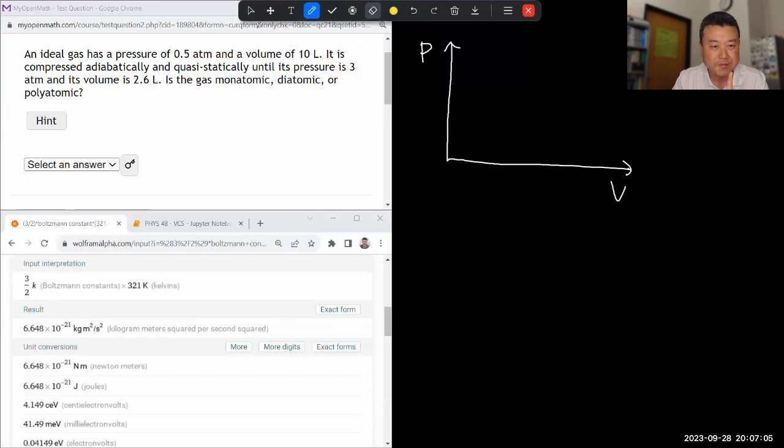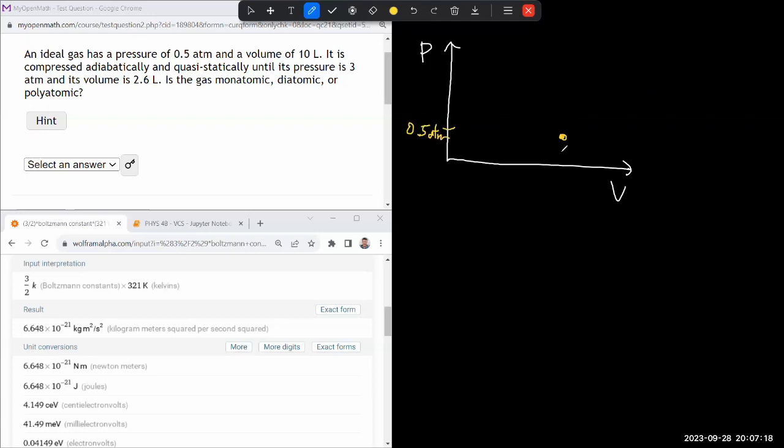So it starts out with some pressure and volume, and it's compressed adiabatically. Okay, so we should start out somewhere here, low pressure, high volume. And then it'll get compressed to something here. And again, when you're drawing it, it'll kind of look like isothermal, you just have to remember for yourself, it's not, to three atmosphere and down to a smaller volume of 2.6 liters. Okay, is the gas monatomic, diatomic or polyatomic? How are we supposed to know? Well, let's take a look.